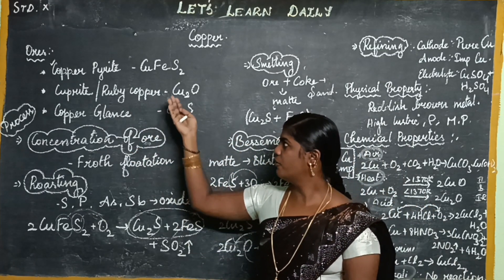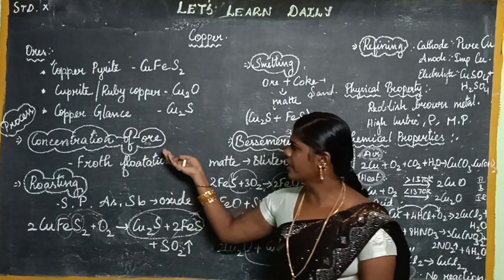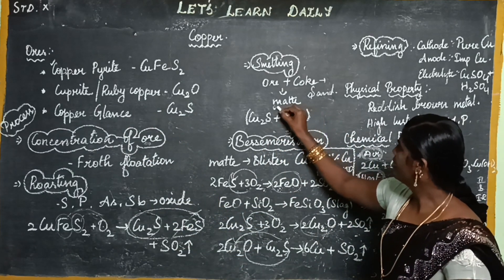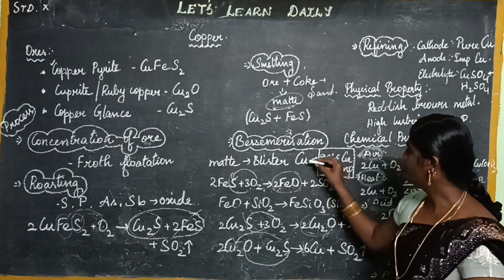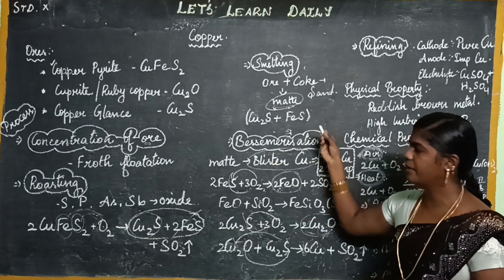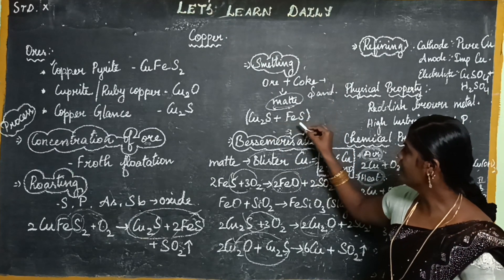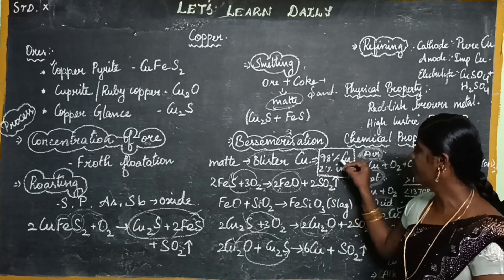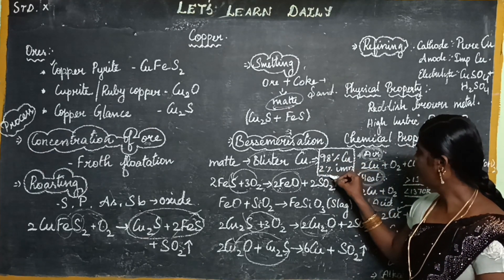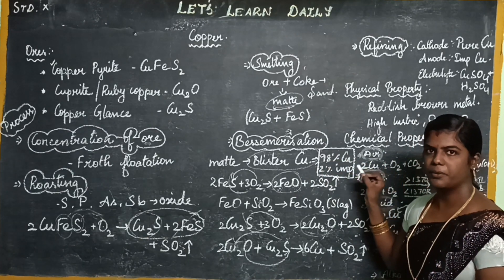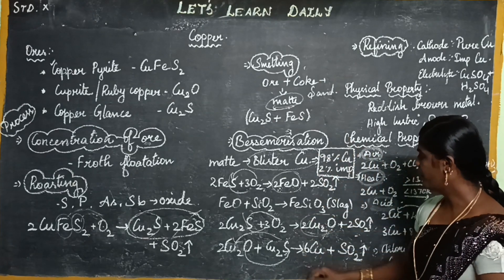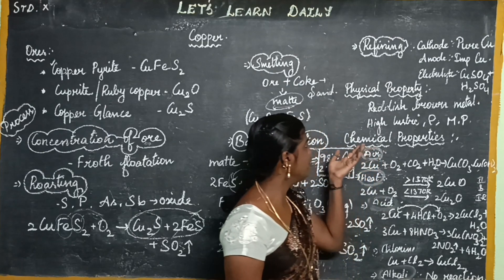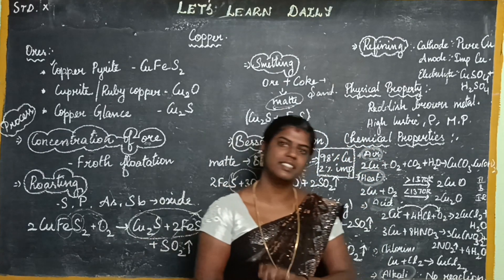Copper's chief ore is copper pyrite. So what is the process? If you look at 2 marks — it's blister copper. Copper matte with FeS — this is blister copper: 98% pure copper and 2% impure. If you follow the refining process, you can refine it. You can use pure copper, with other mixed physical and chemical properties.